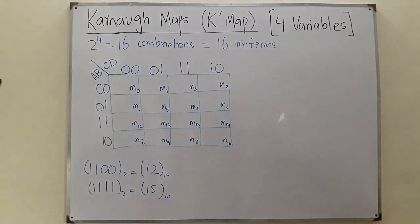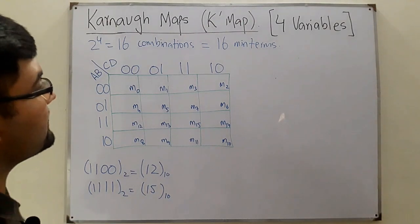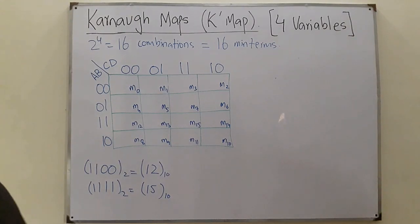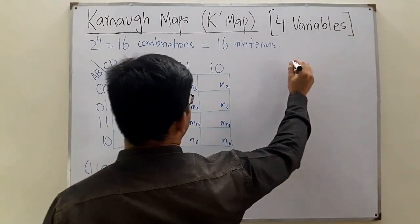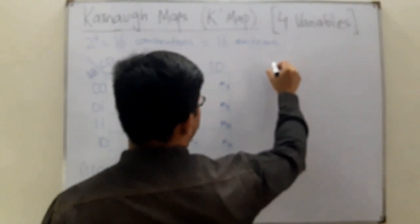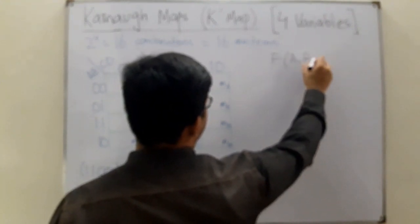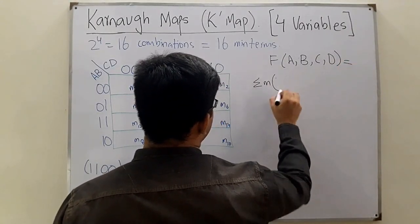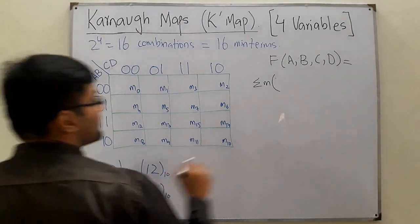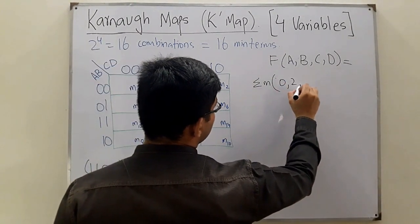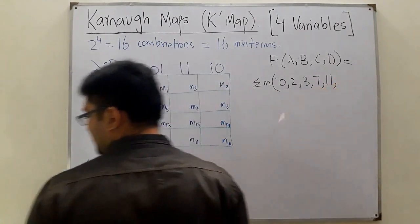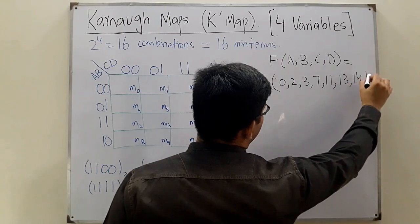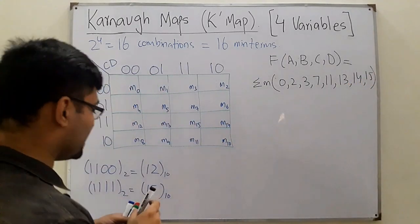To simplify using this four-variable K-map, the rules are the same — you group ones. Let's take an example: a four-variable function F(A, B, C, D) = summation of minterms 0, 2, 3, 7, 11, 13, 14, 15. Now fill in the map.